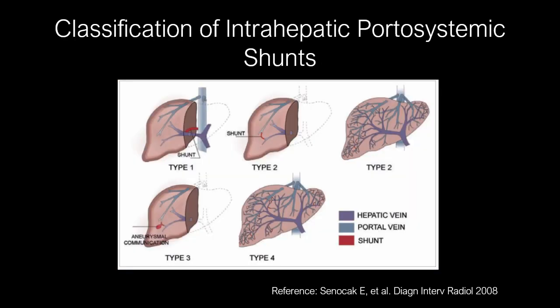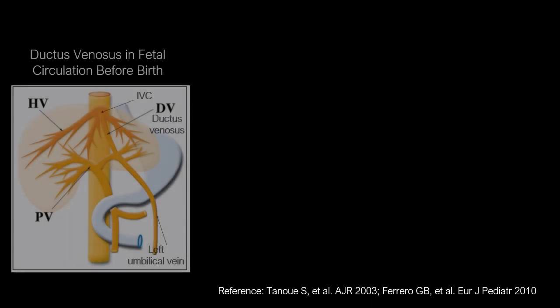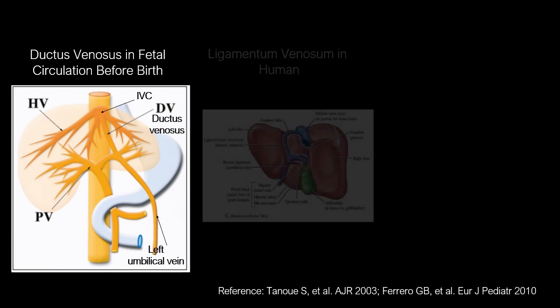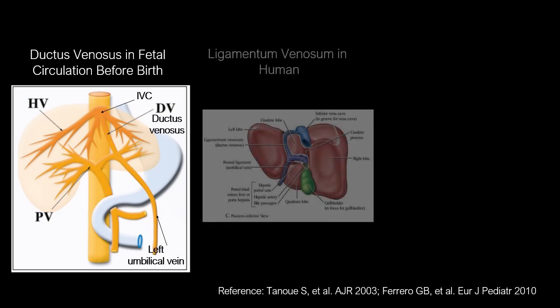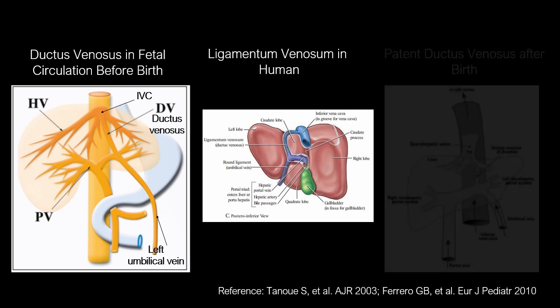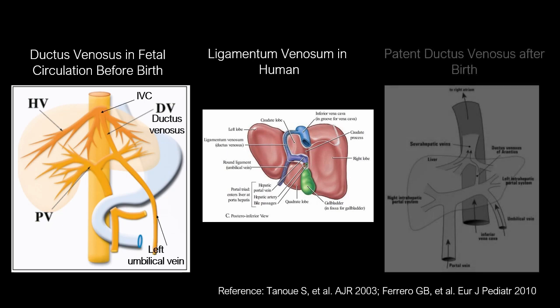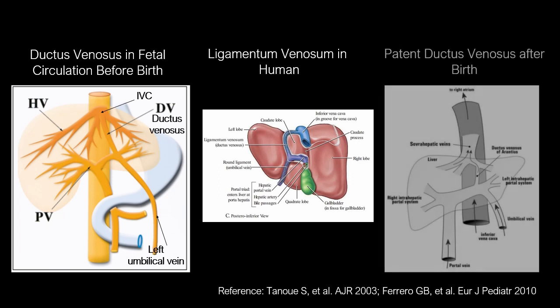Intrahepatic venous shunts are classified into four types according to Port classification. Our case represents a type III shunt, which is an aneurysmal communication between hepatic veins and portal veins. Ductus venosus connects the left umbilical vein to the IVC during fetal life. It closes after birth and is called the ligamentum venosum. It may remain patent after birth and is considered a type V intrahepatic venous shunt by some experts.